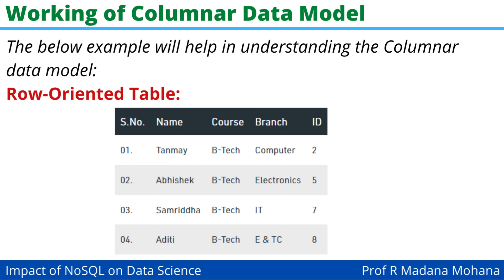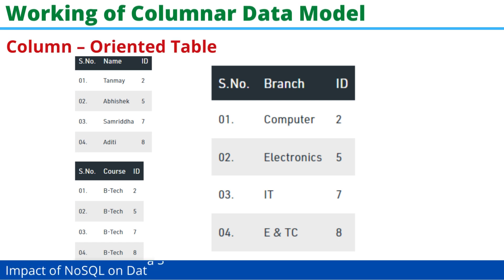First we can see a row-oriented table. This is a normal table with rows and columns, like a normal table used in relational database systems. Here we have serial number, name, course, and branch ID as the columns. The rows are 0, 1, 2, and 4, so records are stored column-wise according to each row.